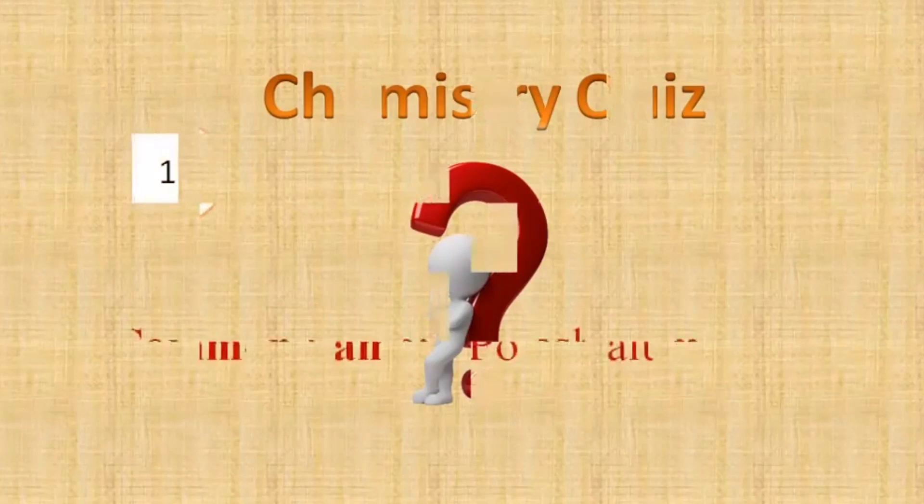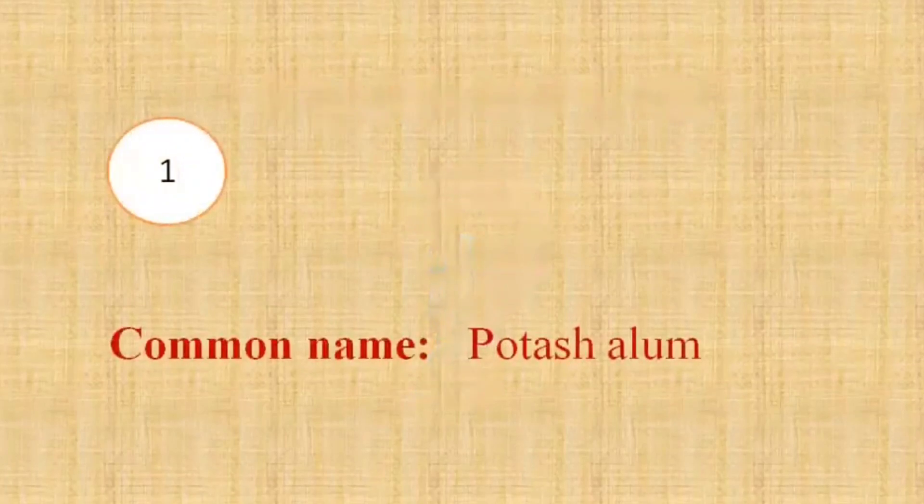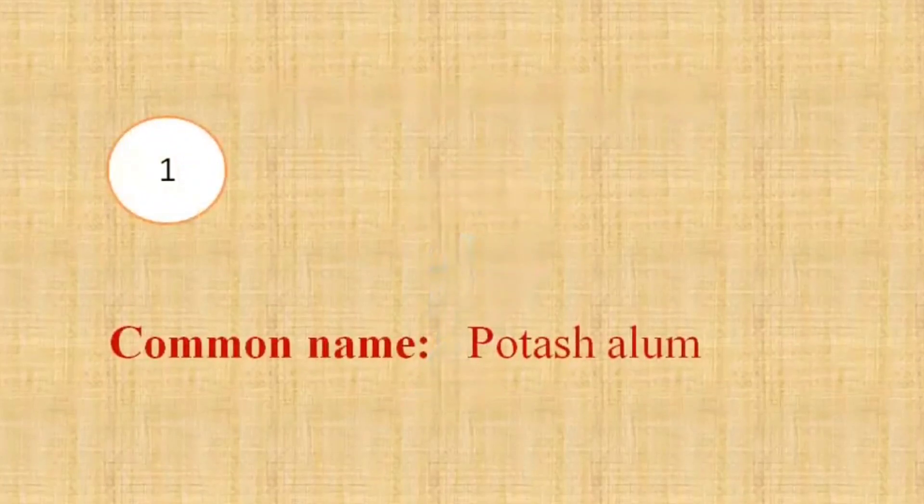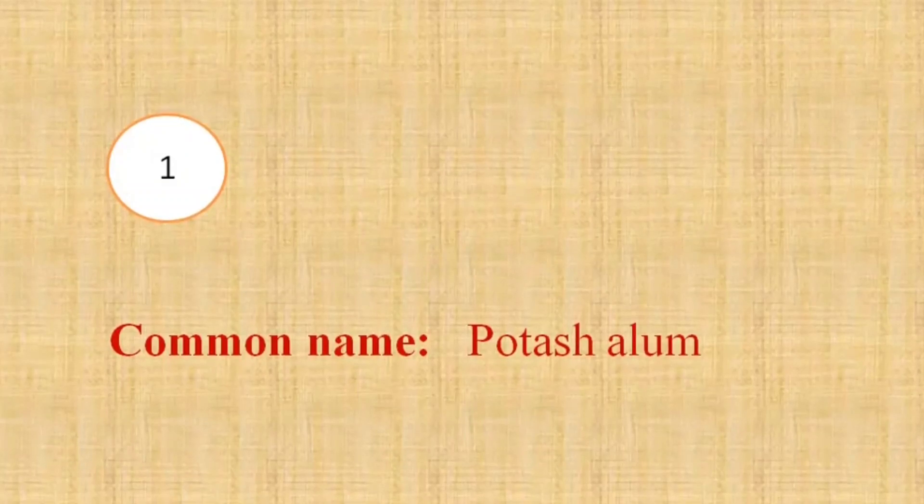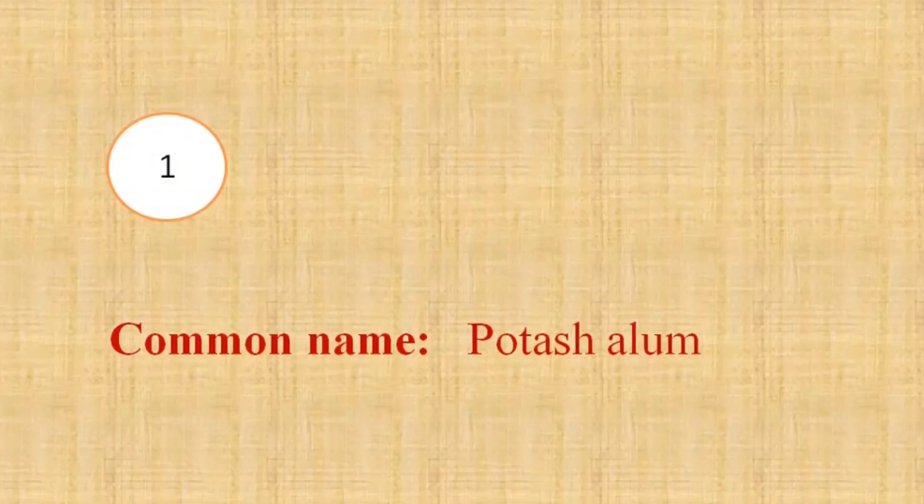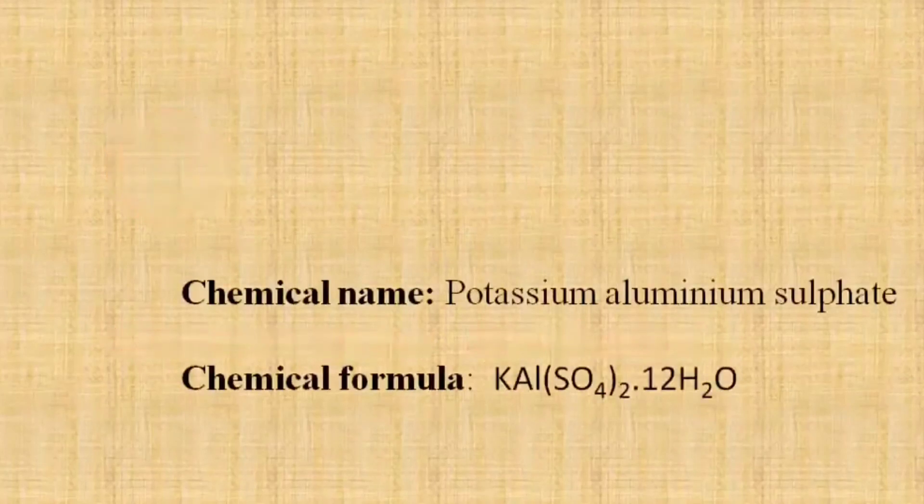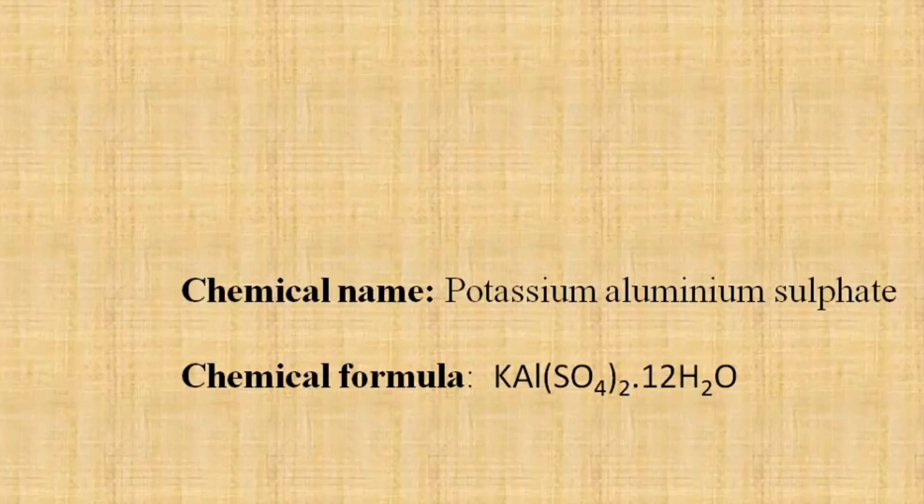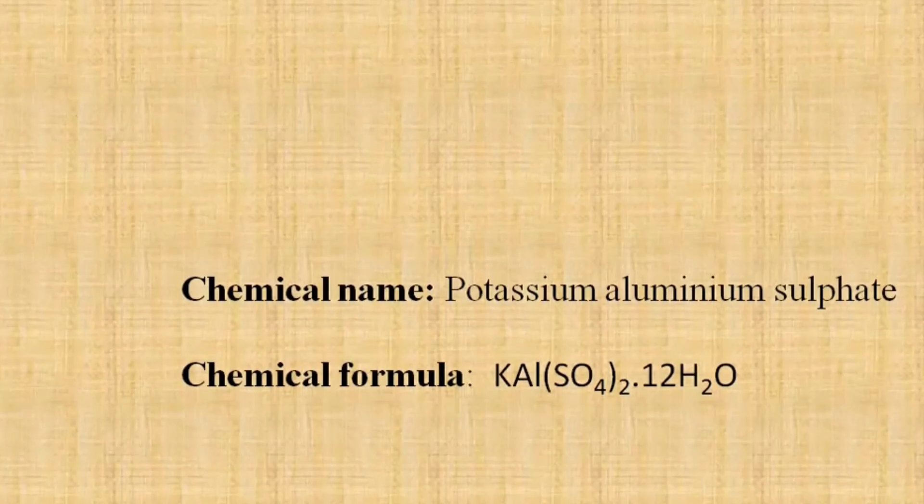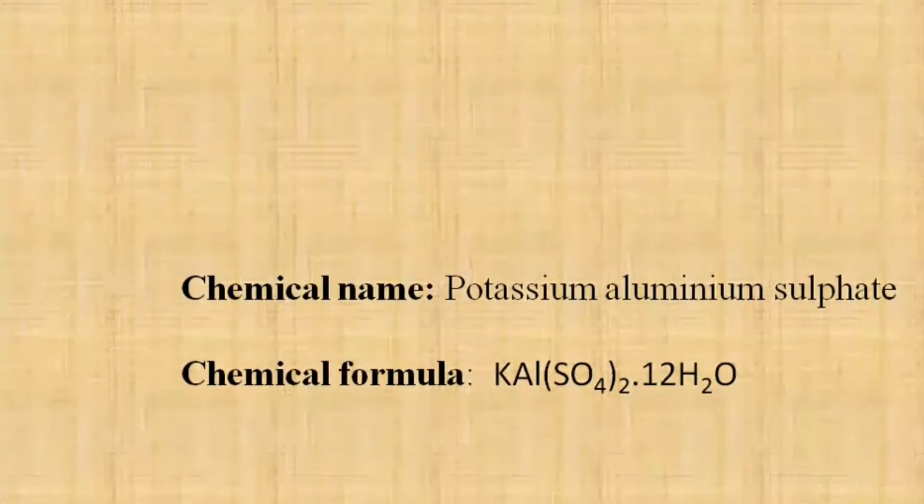Our first question of the quiz is what is the chemical name of potash alum? The chemical name of potash alum is potassium aluminum sulfate. It is present in hydrated form and 12 water of crystallization are attached to it.